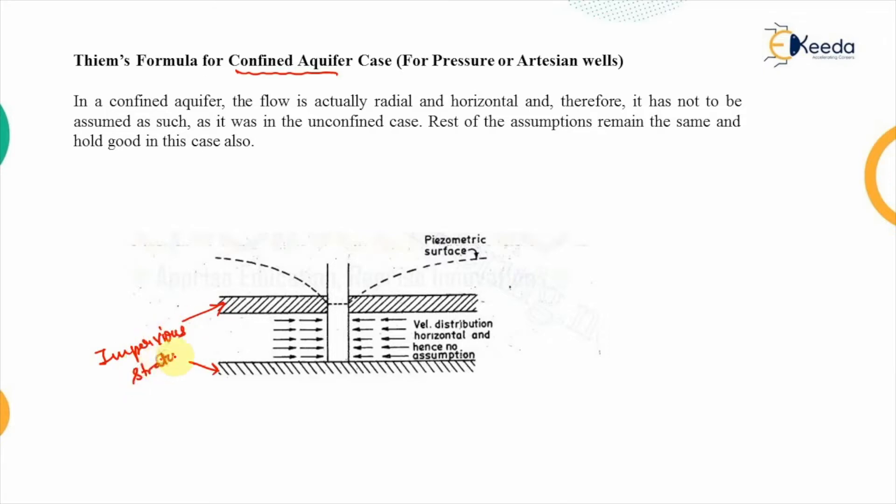So this is the impervious stratum on both sides of the geological formation which is holding the water. Now since it is not exposed to the free surface or as the water is available between the two impervious strata, it is not exposed to the atmosphere or is not having any free surface. Because of which the water is always under the pressure and also the space that it is occupying is like this.